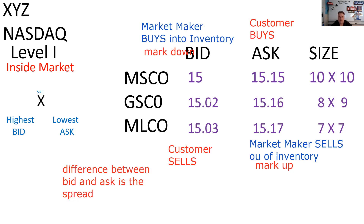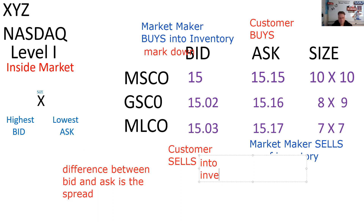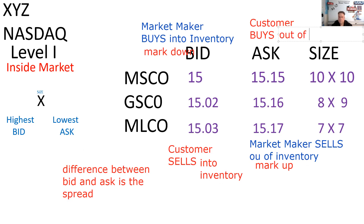In this example, the customer is selling into the broker-dealer's inventory — the market maker's inventory — and the customer is buying out of the inventory. What market makers do is provide liquidity. They're willing to turn money into securities or securities into money, whatever you'd like.